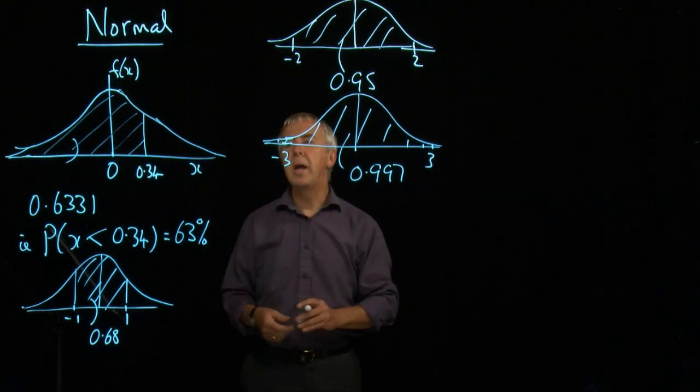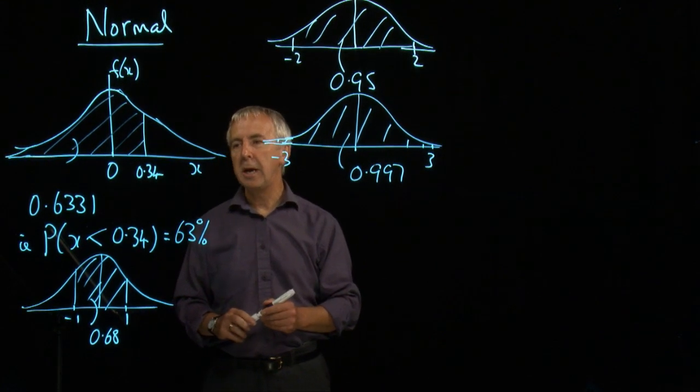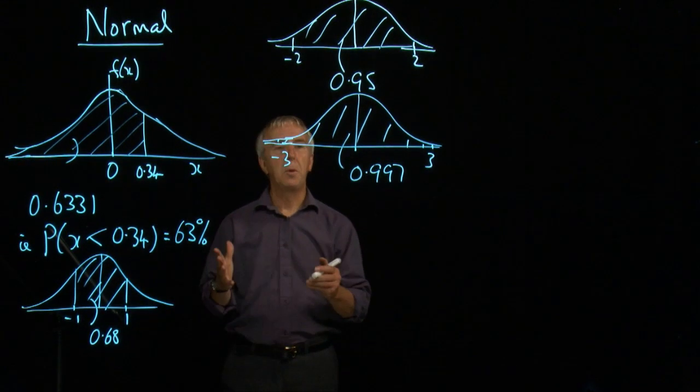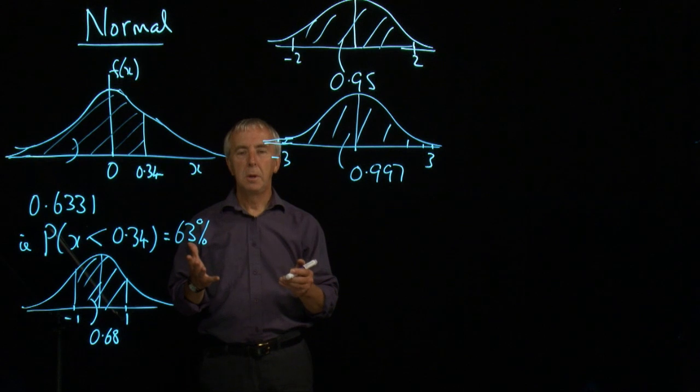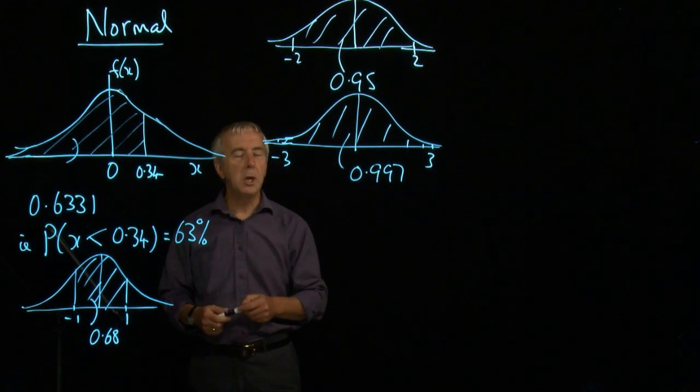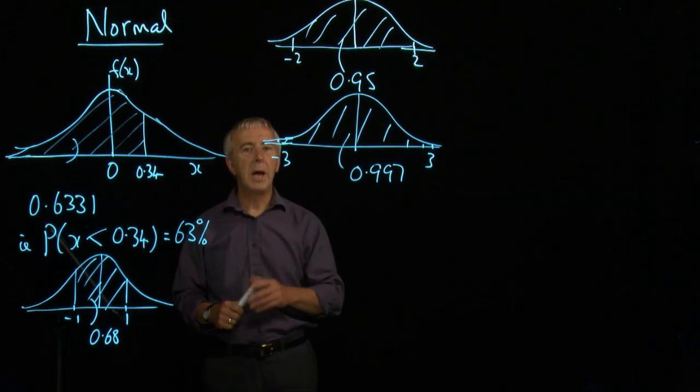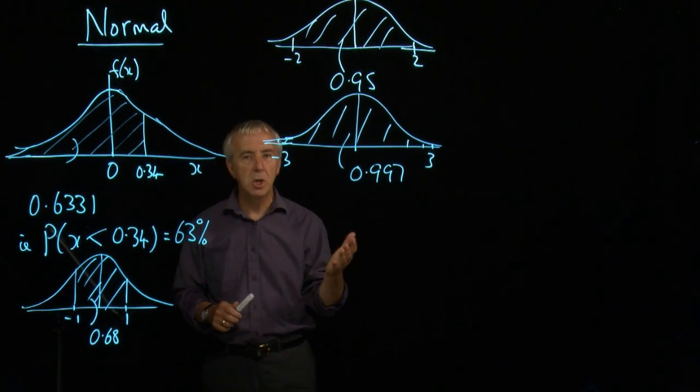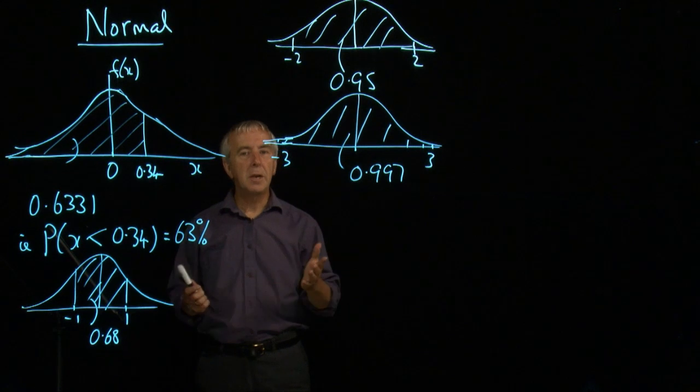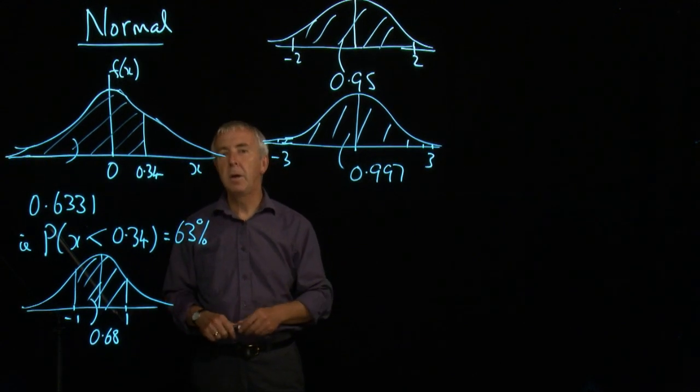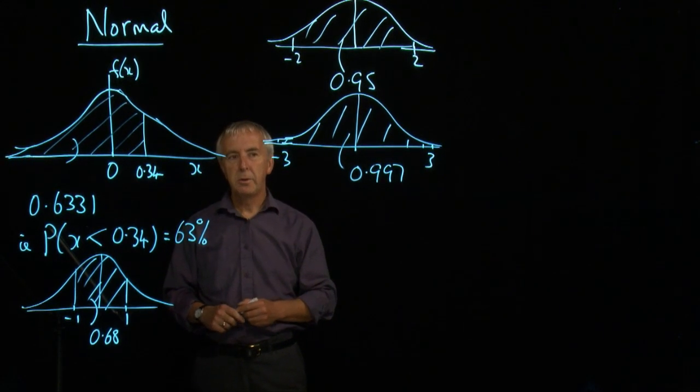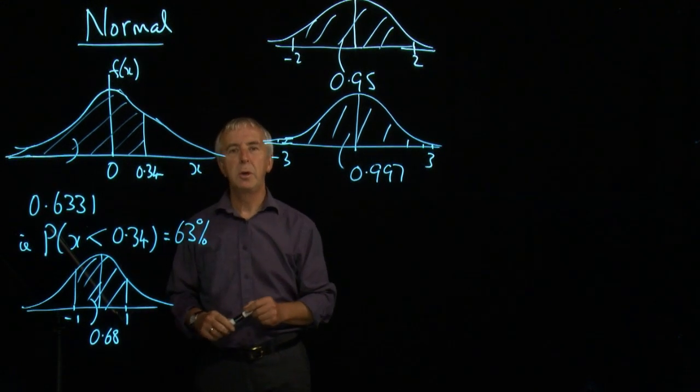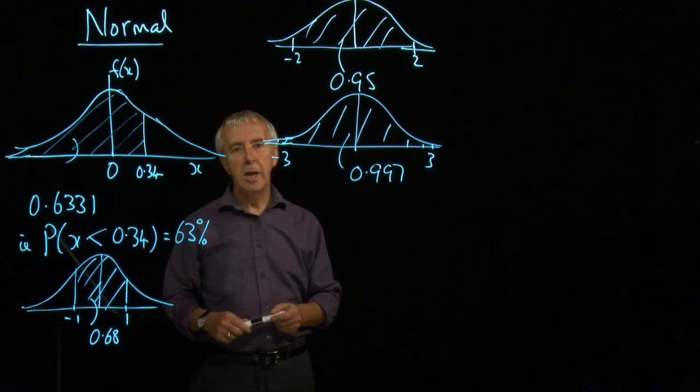Now this is called the standard normal distribution because it has a mean of zero and a standard deviation of one. Most populations don't. The male population might have a mean of five feet eight inches tall with a standard deviation, say, of four inches. So we need to be able to relate that to the standard normal distribution so that we can use the standard tables.